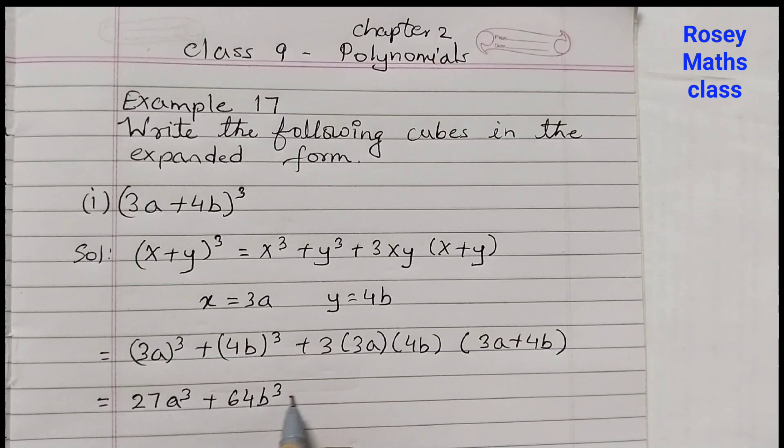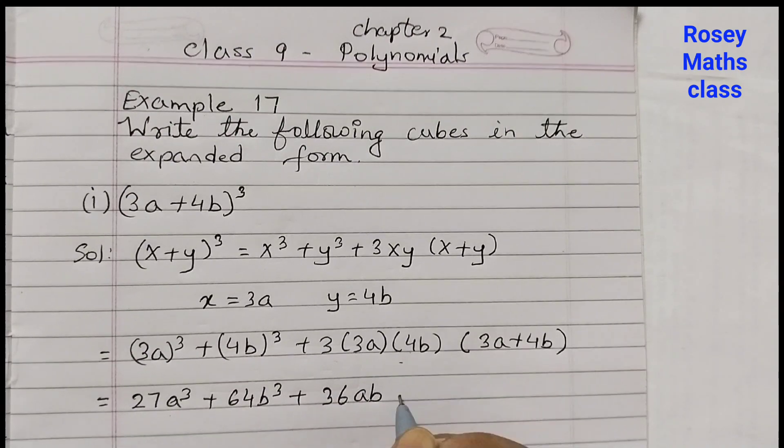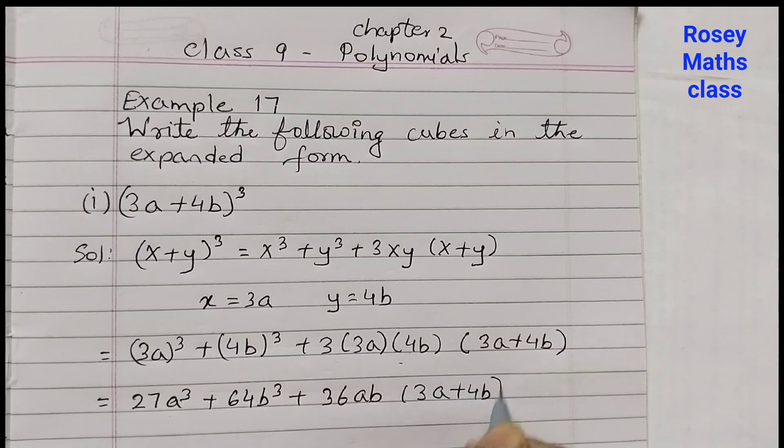64b³ plus these 3 terms are multiplied. 3 times 3 is 9, 9 times 4 is 36. So 36ab(3a + 4b).